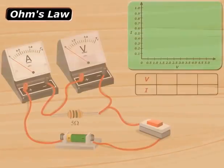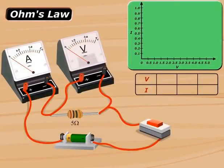Ohm's Law: The current flowing in a conductor is directly proportional to the potential difference across its ends, provided that the physical conditions remain constant.